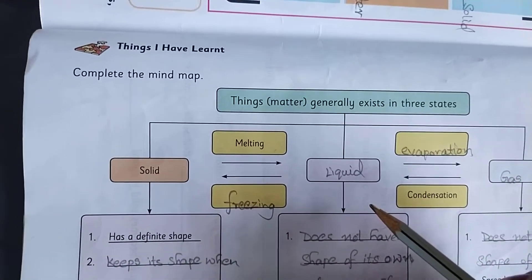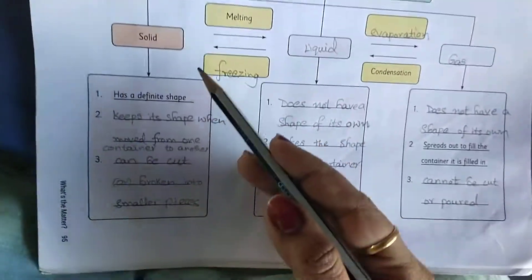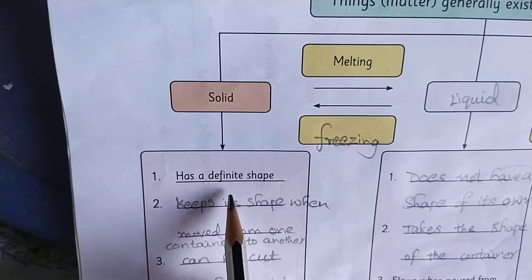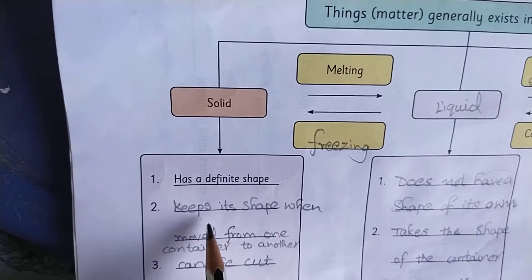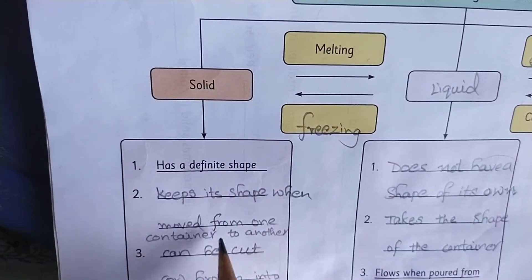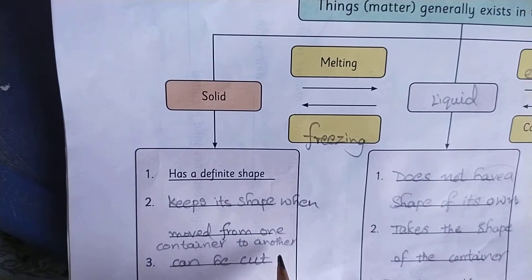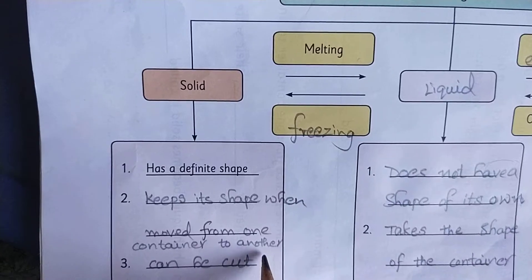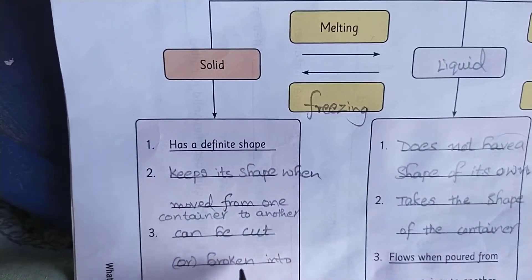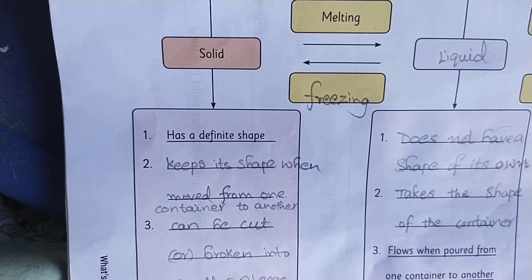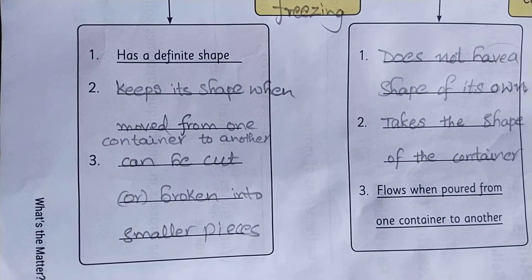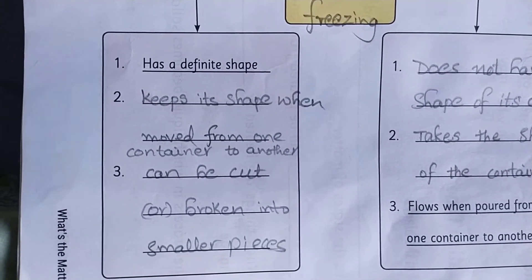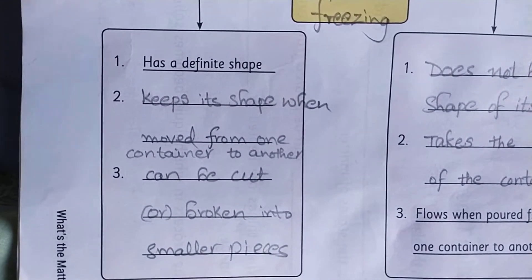First, what are the properties that solids have? You can see here. Solids have a definite shape. It can keep its shape when moved from one container to another container. Solids' shape does not change. They can be cut or broken into smaller pieces — if we cut solids, we can make them into smaller pieces.